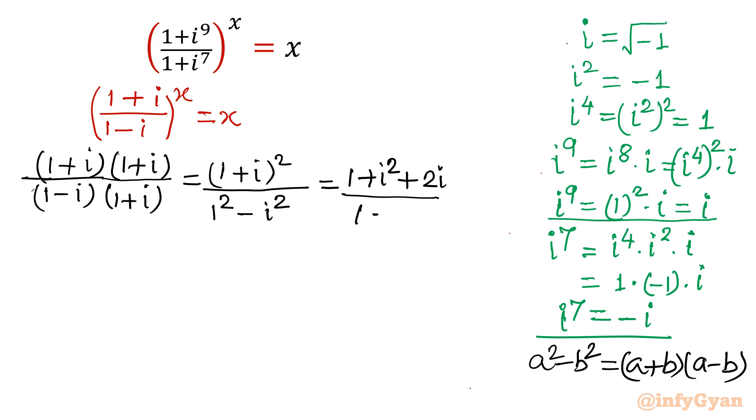So it will give us 1 + i^2 + 2i over 1. 1 squared is 1. i squared is negative 1. So minus of minus 1 plus 1. Now you will write i^2 as minus 1. So I will cancel both the terms. So overall what we are getting from there, it is 2i over 2. Hence it is i. So inside the bracket, it is ultimately i. So equation will convert into i^x equal to x. This equation we are going to solve.